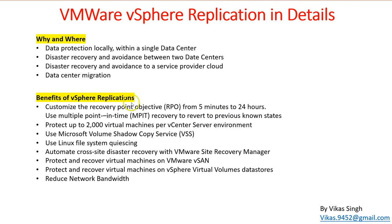You can also use Microsoft Volume Shadow Copy Services (VSS) for applications running inside Windows — such as SQL Server, Active Directory, SharePoint, Exchange, or other databases — to ensure application-consistent replication. Linux file quiescing is also supported for Linux machines. Additionally, you can use Site Recovery Manager (SRM) to automate cross-site disaster recovery: if site A goes down, everything can automatically come up on site two.